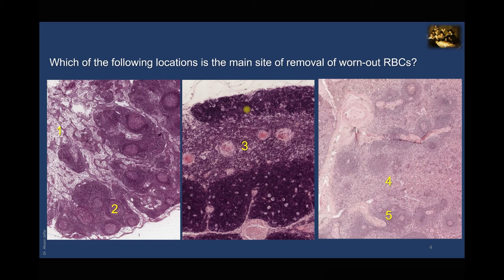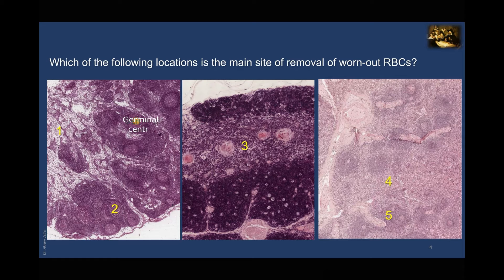Which of the following locations is the main site of removal of worn-out RBCs? Removal of worn-out erythrocytes from the blood primarily takes place by macrophages of the splenic cords. The slide on the left shows an encapsulated lymphatic organ — look at the capsule of connective tissue and note the presence of a cortex, a medulla, and lymphatic nodules with a clear germinal center in the cortex. So this slide with its locations two and one is not the main site of removal of worn-out RBCs; it is a lymph node.